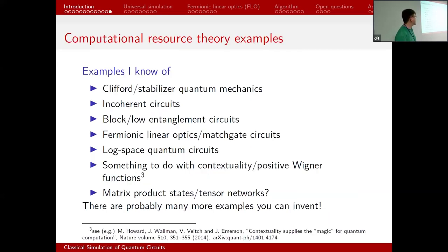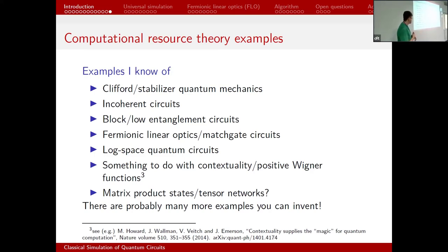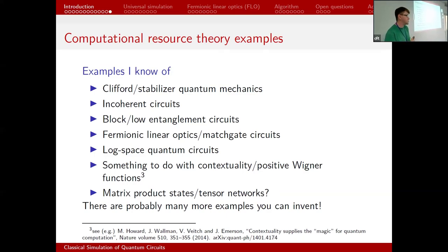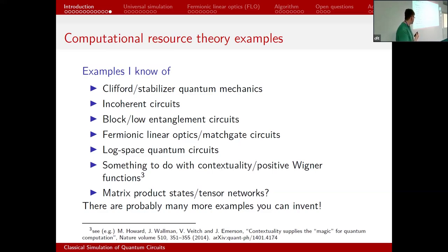Here is a slide with many examples of computational resource theories I managed to cook up: fermionic linear optics, large space quantum circuits (arbitrary quantum circuits with a logarithmic number of qubits, where 2^(log n) is polynomial), Wigner functions, and possibly things involving post-selection. There are lots of examples. I spoke to Richard Jozsa in Cambridge about this, and he thinks you can make something involving post-selection as well, but I didn't fully follow it.